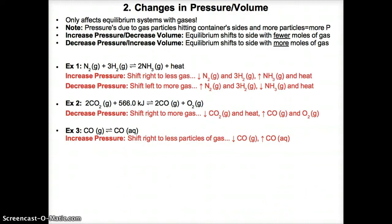If you lower pressure or raise volume, the problem is the pressure is too low — too few particles. To counter this, shift towards the side with more moles of gas to bring the pressure back up to equilibrium levels. When solving Le Chatelier's Principle problems involving pressure, first find the number of moles of gas on each side to determine which side has more or fewer moles.